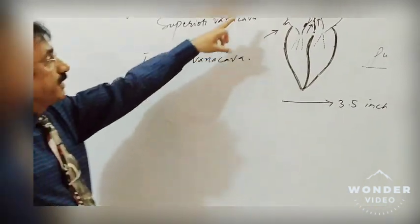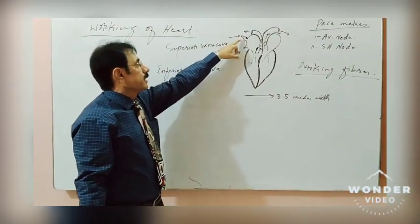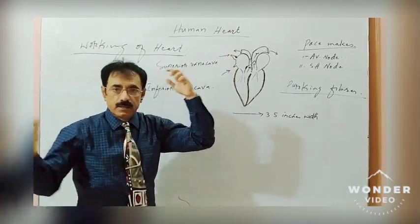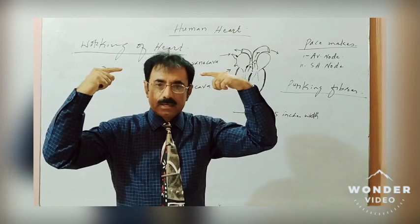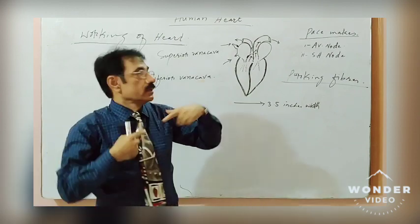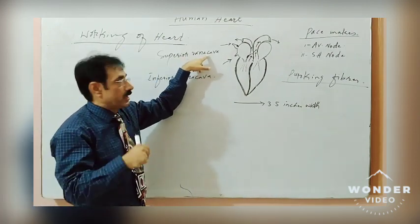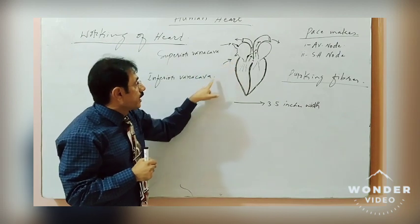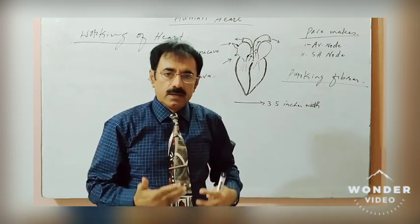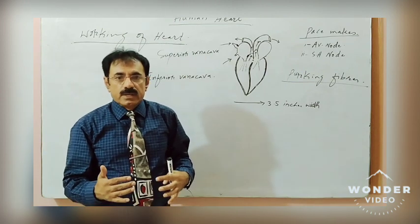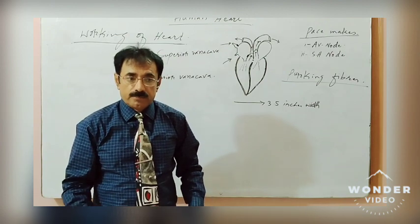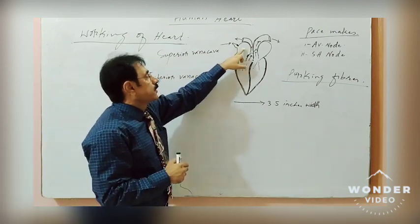The superior vena cava carries blood from the head and arm region. These organs — the head and the arms — are superior to the heart level, so this vein is called the superior vena cava. The inferior vena cava is so called because the lower body parts, the legs and all other body parts which lie below the heart level.